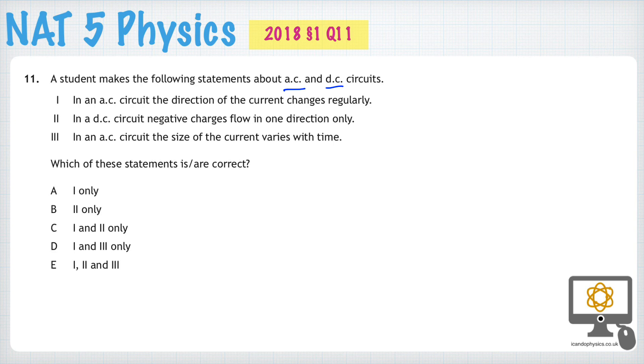In an AC circuit, the direction of the current regularly changes. That is true. AC means alternating current, which means the charges all move in one direction and then they change direction and all move in the other direction. They go back and forth to and fro.